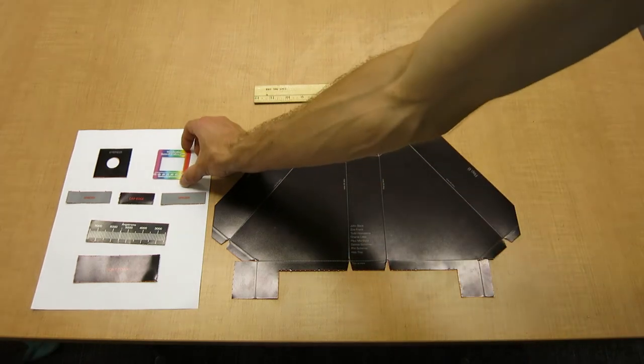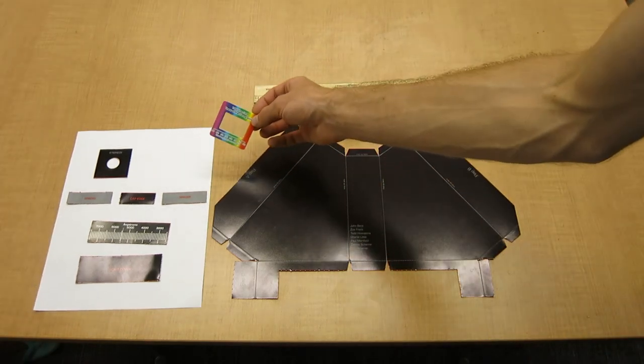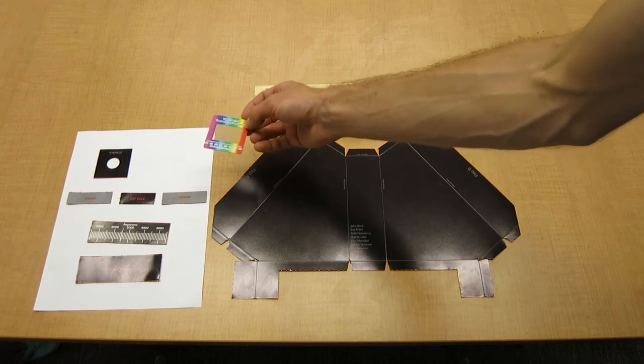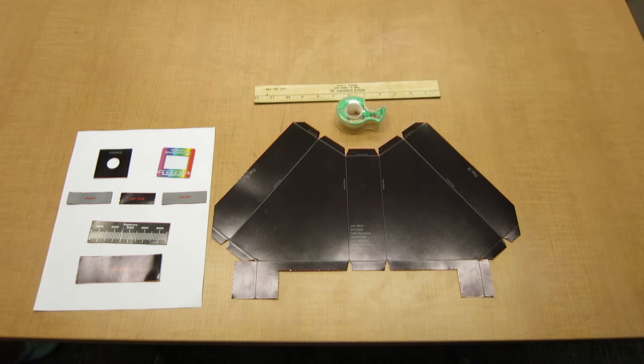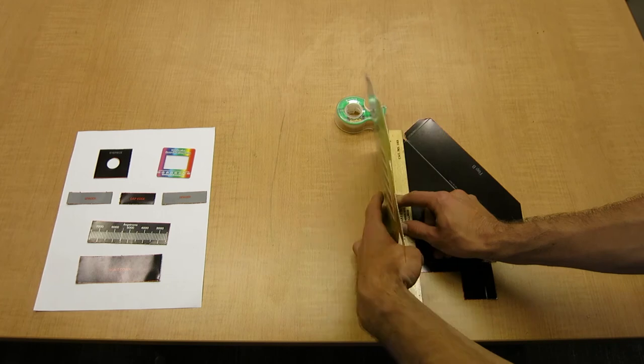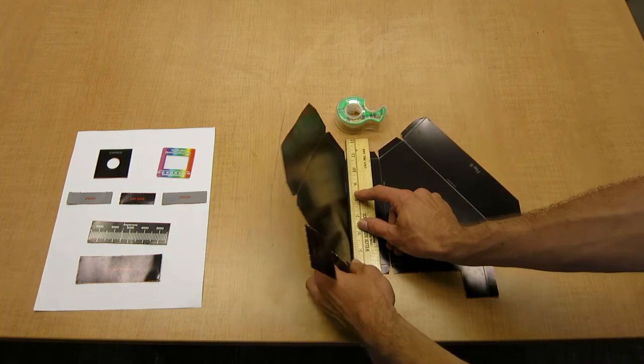While you're building the spectroscope, make sure to be careful not to touch the surface of the diffraction grating because you'll get oils on it or damage it. Start folding your spectroscope with the black side up. Crease along each of these gray lines using the ruler.